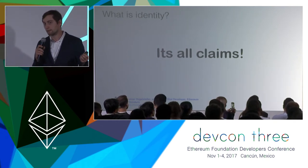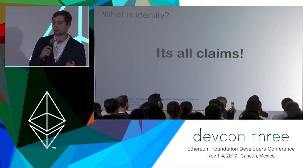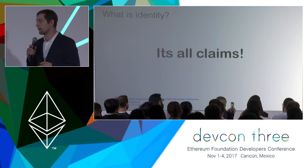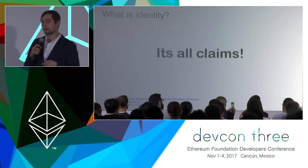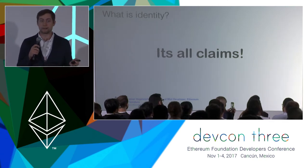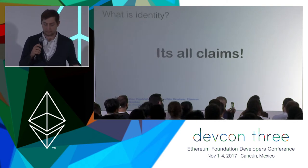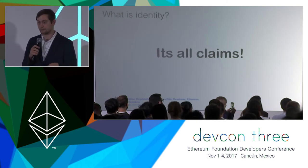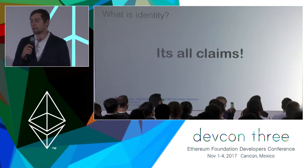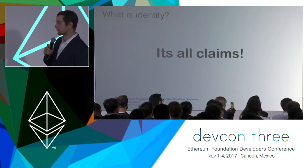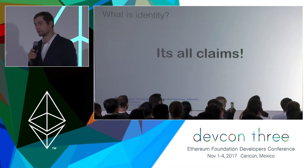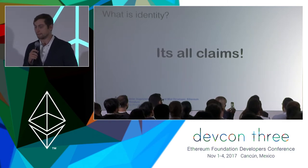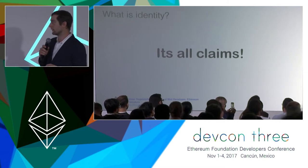Maybe not necessarily with our friends — with our friends we might use social networks, which is also kind of a collection of claims. But if we go to any company or cooperation, make an interview or whatever, we just take all of these claims and show them: look at all these titles, I did this and this and that. And this basically tells the other person: yeah, I trust this university, it's a big one, looks like a real thing — I might just hire him, for example.